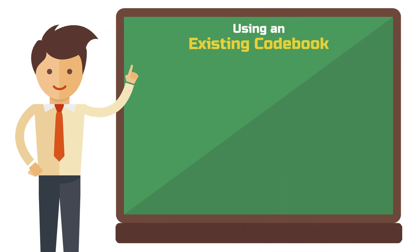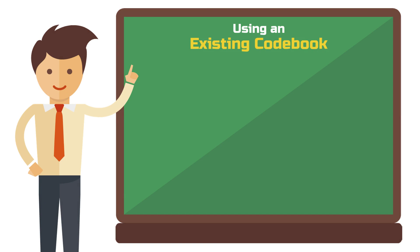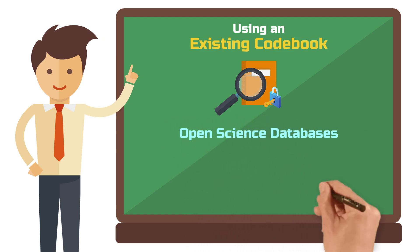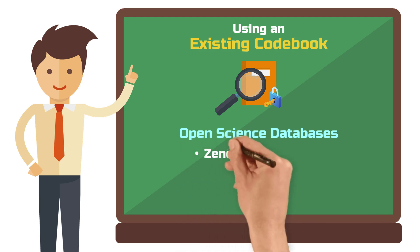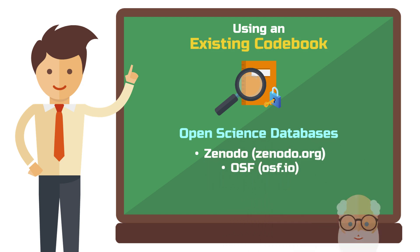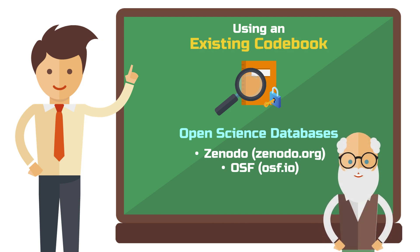Using an existing codebook. Creating a new codebook from scratch can be time-consuming, so it's worth checking for existing codebooks first. Where to find existing codebooks? Open science databases — many researchers share data sets and resources, including codebooks, to support the academic community. You can check out Zenodo or OSF (Open Science Framework). Contacting authors: if a paper references a codebook but doesn't provide it in an appendix, try emailing the authors.